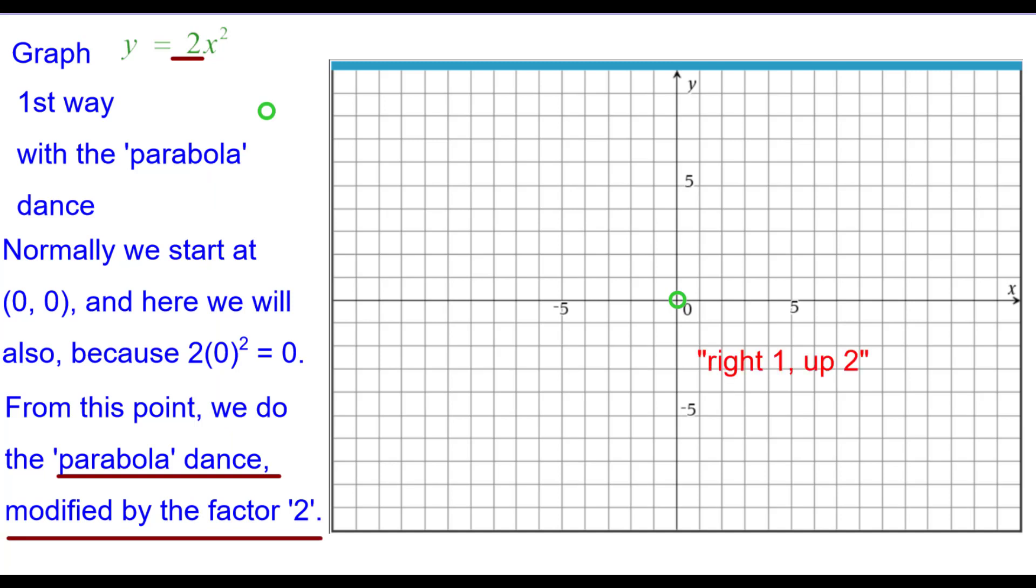So we'll go right 1 up 2. Normally we go right 1 up 1 but we have to double that y value because of the 2. Right 2 up 8 instead of right 2 up 4 because we're doubling the 4. Left 1 up 2 instead of left 1 up 1 and left 2 up 8.